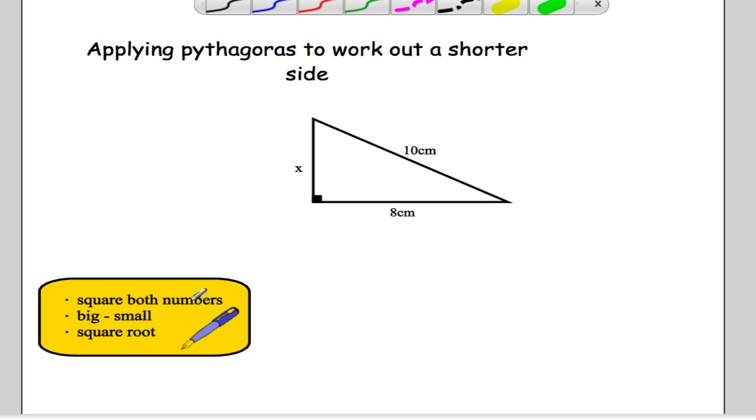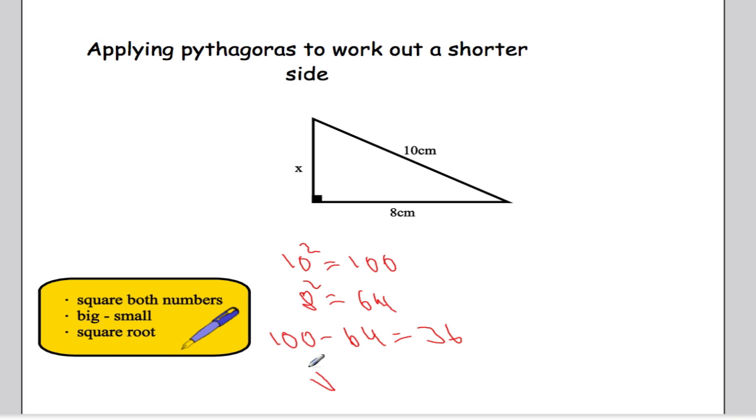Now it's a very, very similar method. We're going to square both numbers again. So 10 squared gives me 100. I'm going to square 8. So 8 squared gives me 64. Now we're going to do the biggest number, take away the smallest. So 100 take away 64 gives us 36. And then we take the square root of that. So square root of 36 is 6. So this here is 6 centimeters long. And that is how you apply Pythagoras to work out the shorter side.